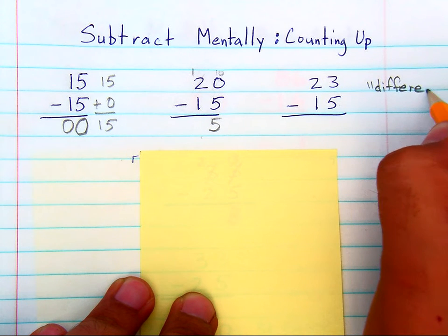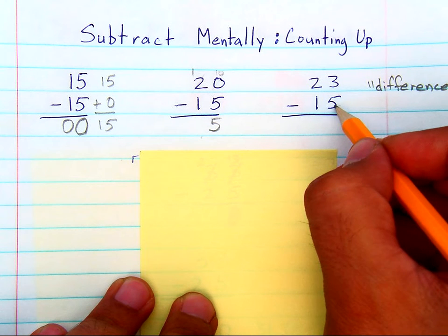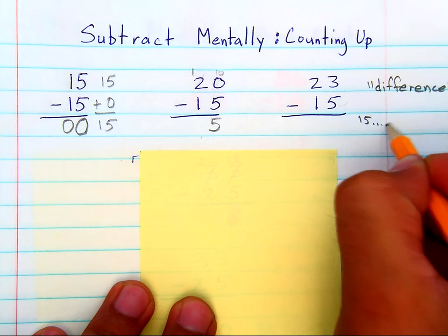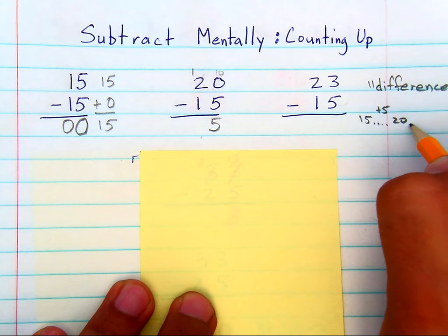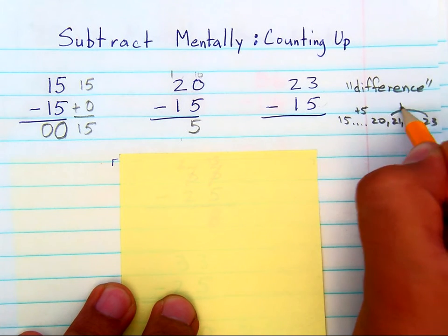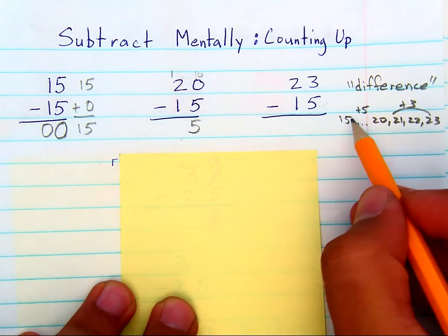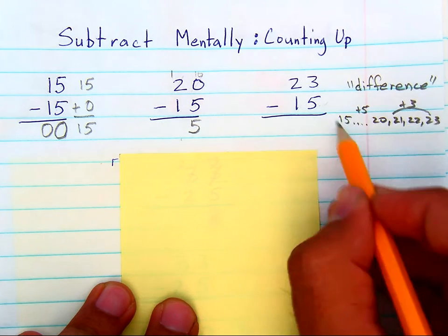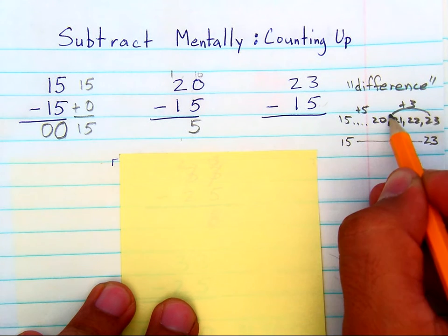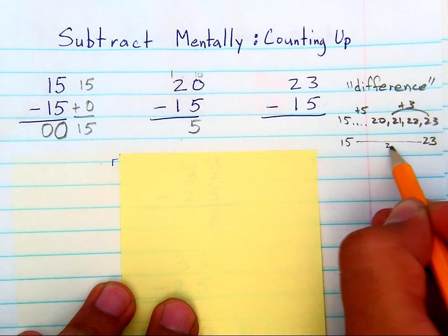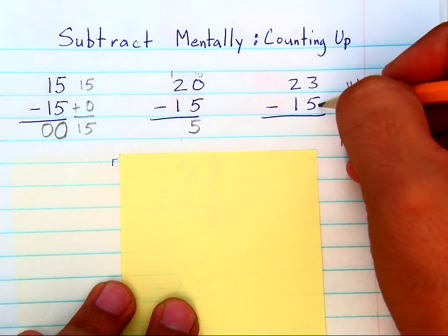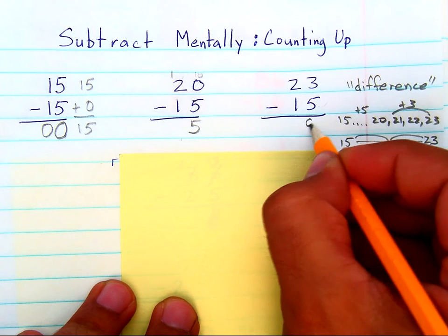There's a difference between the numbers, and that difference is what they're finding. Count up from fifteen: from fifteen to twenty, that's five. From twenty to twenty-three — twenty-one, twenty-two, twenty-three — that's three more. I wouldn't ever expect a student to write all this out; this is done in your mind. From fifteen all the way to twenty-three it's five plus three — fifteen to twenty is five, twenty to twenty-three is three — so the difference is eight.